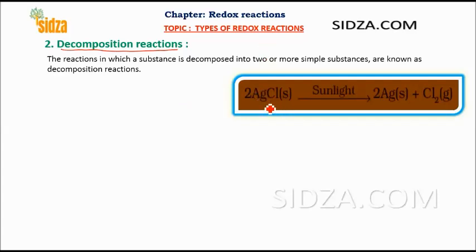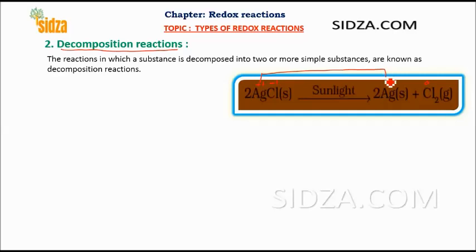For example, silver chloride (AgCl) in the presence of sunlight breaks down into silver and chlorine. Silver has a plus one oxidation state and chlorine is minus one. The oxidation number of silver changes from plus one to zero — that is reduction — and chlorine changes from minus one to zero — that is oxidation. So one substance gets oxidized and another gets reduced, making this a redox reaction and a decomposition reaction.